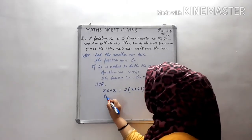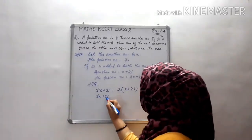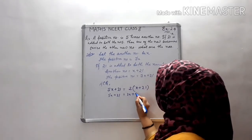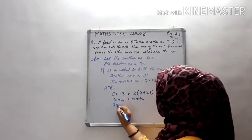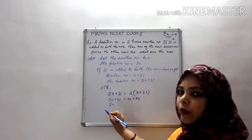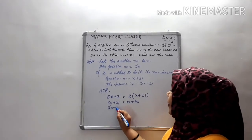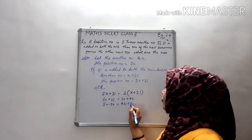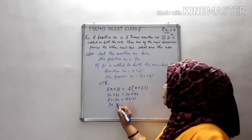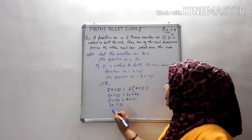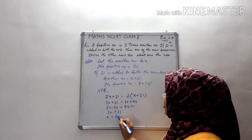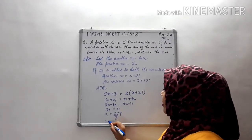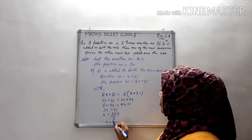So 5x plus 21 equals 2x plus 42. Transposing: 5x minus 2x equals 42 minus 21, giving 3x equals 21. Therefore x equals 21 divided by 3, so x equals 7.